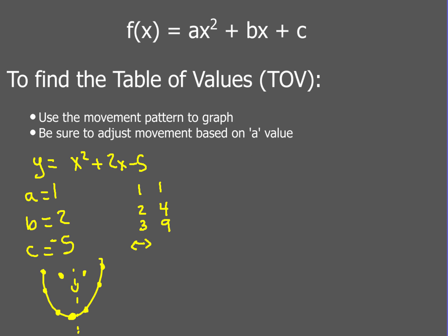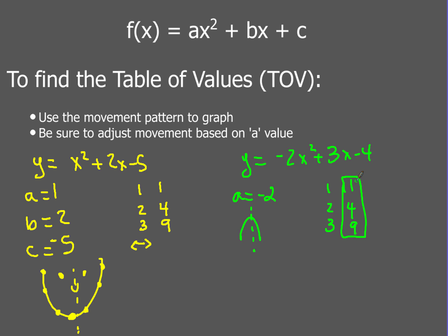However, if my parabola equation was y equals negative 2x squared plus 3x minus 4, my A value is negative 2, which means my parabola is gonna open down. Instead of using the normal movement pattern of one, two, three giving one, four, nine, I've gotta take those one, four, nine numbers and multiply them by my A value. So one times negative two is negative two; four times negative two is negative eight; nine times negative two is negative eighteen. From the vertex, I'd go over one but down two, then over two but down eight. I'd do the same thing moving to the left because the parabola is symmetrical.